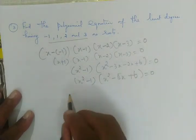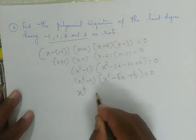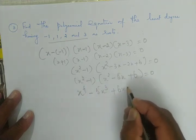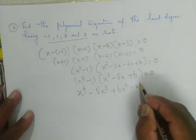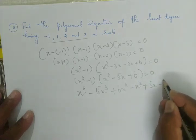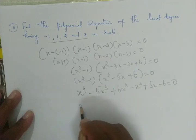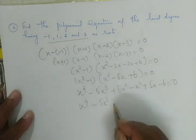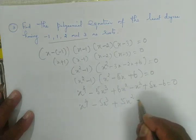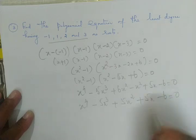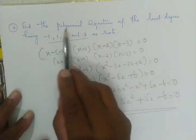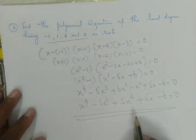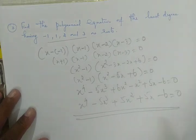Expanding: x⁴ - 5x³ + 6x² - x² + 5x - 6 = 0. Simplifying: x⁴ - 5x³ + 5x² + 5x - 6 = 0. This is the required polynomial equation for 4 roots, also called a biquadratic equation.